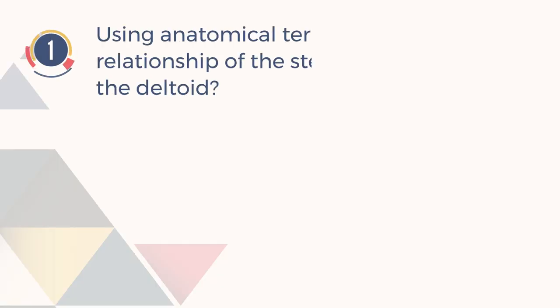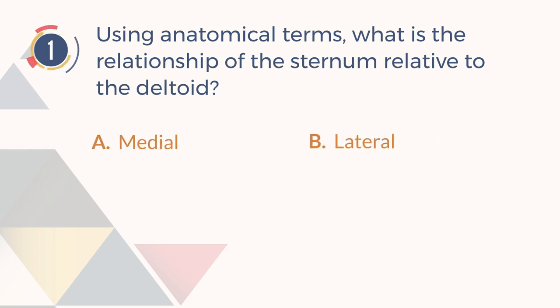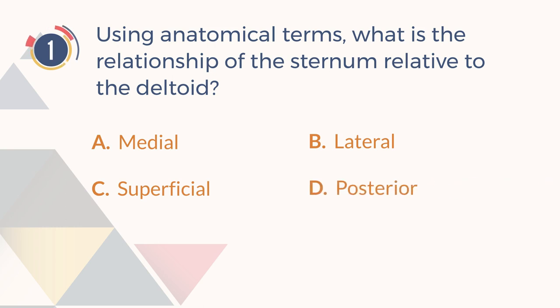Number 1. Using anatomical terms, what is the relationship of the sternum relative to the deltoid? A. Medial. B. Lateral. C. Superficial. D. Posterior.